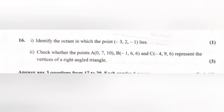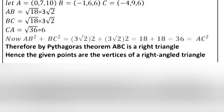Question 2. Check whether the points A(0, 7, 10), B(minus 1, 6, 6), and C(minus 4, 9, 6) represent the vertices of a right-angled triangle. Answer: AB equal root 18 equal 3 root 2; BC equal root 18 equal 3 root 2; CA equal root 36 equal 6. Then AB squared plus BC squared equal 18 plus 18 equal 36 equal CA squared. Therefore by Pythagoras' theorem, ABC is a right triangle, and the given points are the vertices of a right-angled triangle.